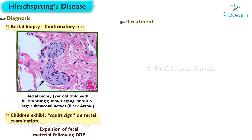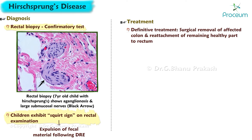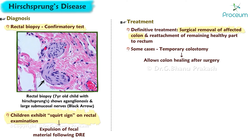The definitive treatment of Hirschsprung's disease typically involves surgical removal of the affected portion of the colon and reattachment of the remaining healthy part to the rectum. In some cases, a temporary colostomy may be necessary to allow the colon to heal after surgery. If left untreated, infants may develop enterocolitis or bowel perforation.